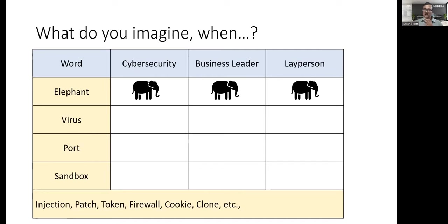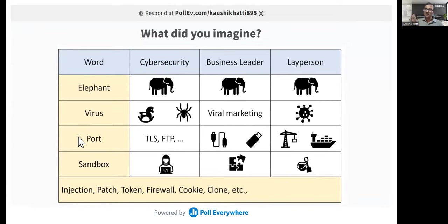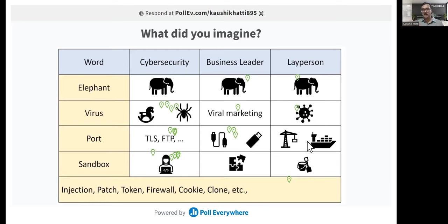Even though these are all words — words are facts, and they are data — even for these simple single words, they can mean completely different things depending on your domain. A cybersecurity expert might think of progen or some other malware when they see 'virus,' while a layperson is probably thinking of COVID. 'Port' could be a database port, a firewall port, FTP, HDMI, USB-C, or a shipping port. 'Sandbox' might make someone think of a play area with a scoop.